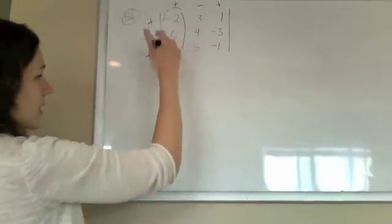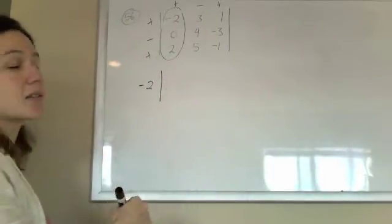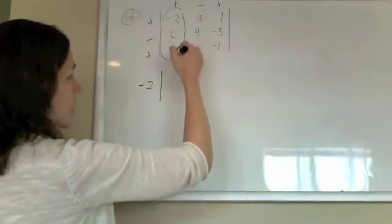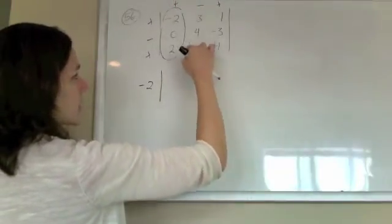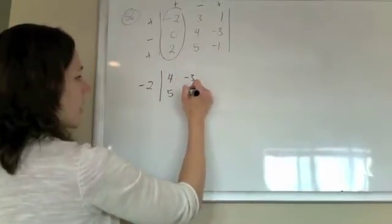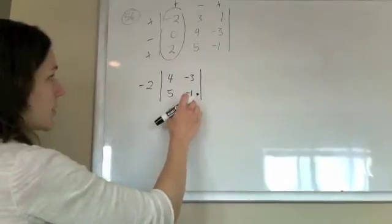So, I'm going to start with the negative 2, and I'm going to multiply it by his minor, so his minor comes when I cross out his row and his column, what's left is this little thing here, 4, negative 3, 5, negative 3. So, that's a little determinant, we'll set him aside, we'll do that later.